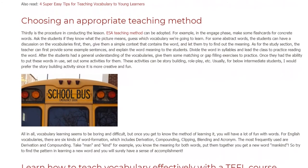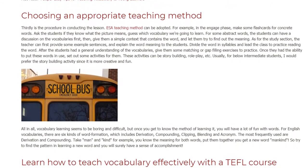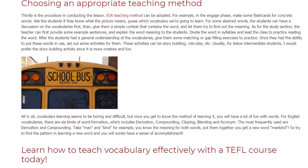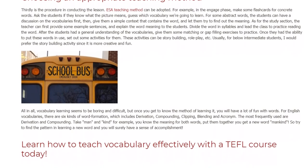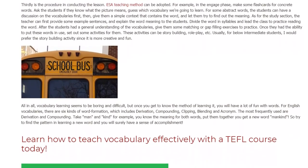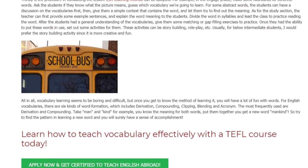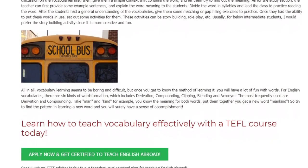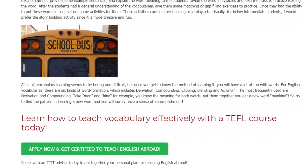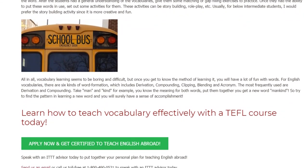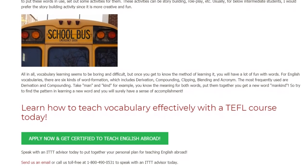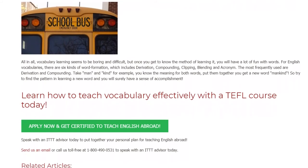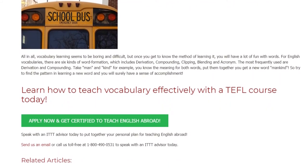Usually for below-intermediate students, I would prefer the story building activity since it is more creative and fun. All in all, vocabulary learning seems to be boring and difficult, but once you get to know the method of learning it, you will have a lot of fun with words. For English vocabularies, there are six kinds of word formation, which includes derivation, compounding, clipping, blending, and acronym. The most frequently used are derivation and compounding. Take 'man' and 'kind' for example — you know the meaning for both words, put them together and you get a new word: 'mankind'. So try to find the pattern in learning a new word and you will surely have a sense of accomplishment.